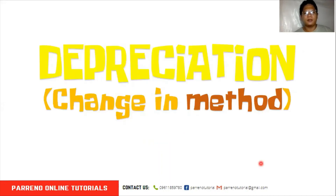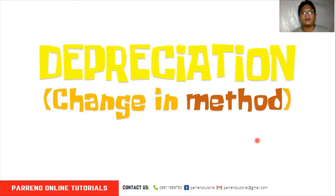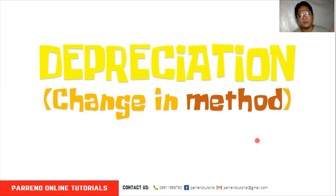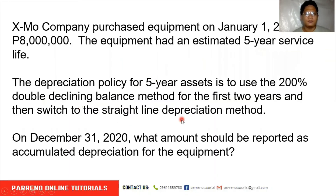Another depreciation topic: change in method. Sometimes a company may decide to change its depreciation method if they find the current method is no longer appropriate for their asset, or it could be part of their depreciation policy where the earlier part of an asset's life uses one method and the later part uses another. Let's discuss change in method. Exmo company purchased equipment on January 1, 2018.